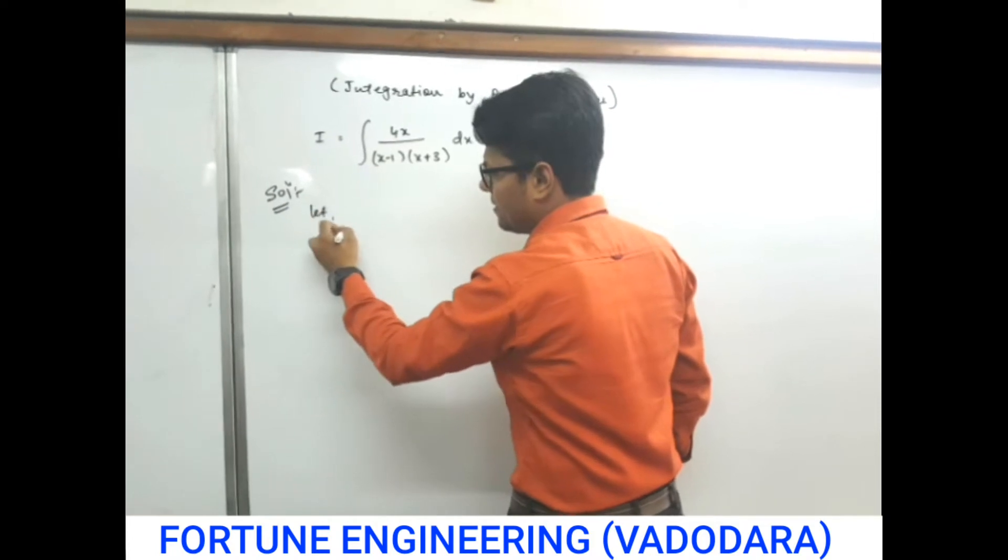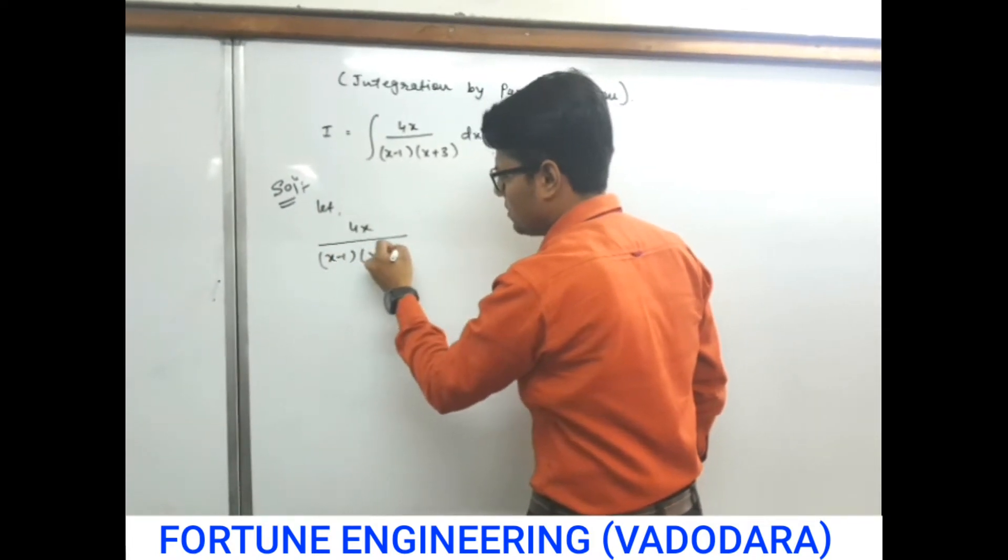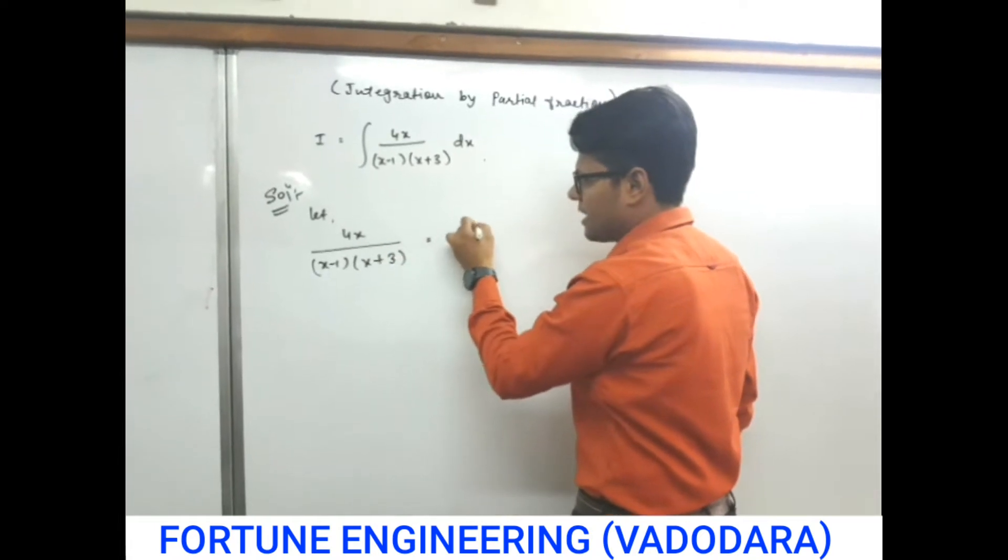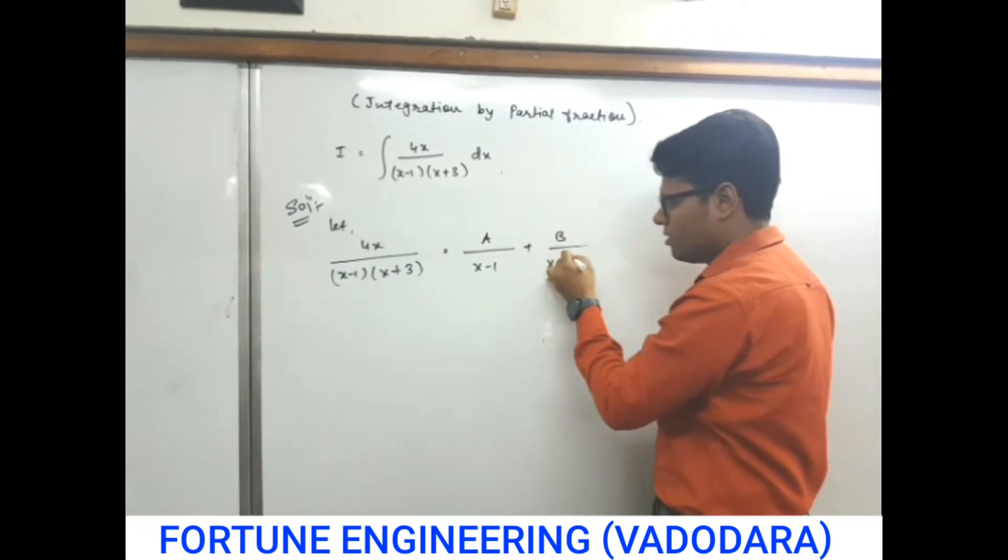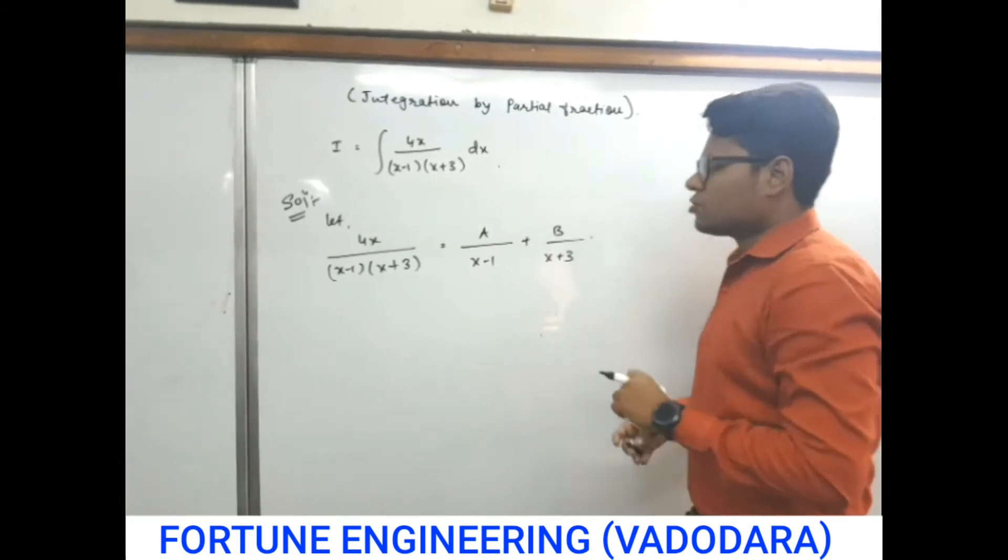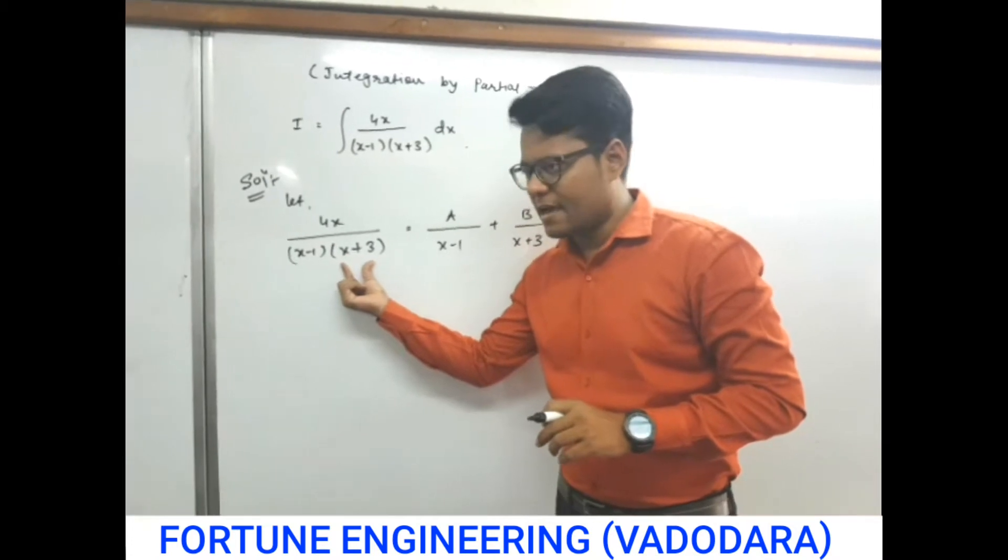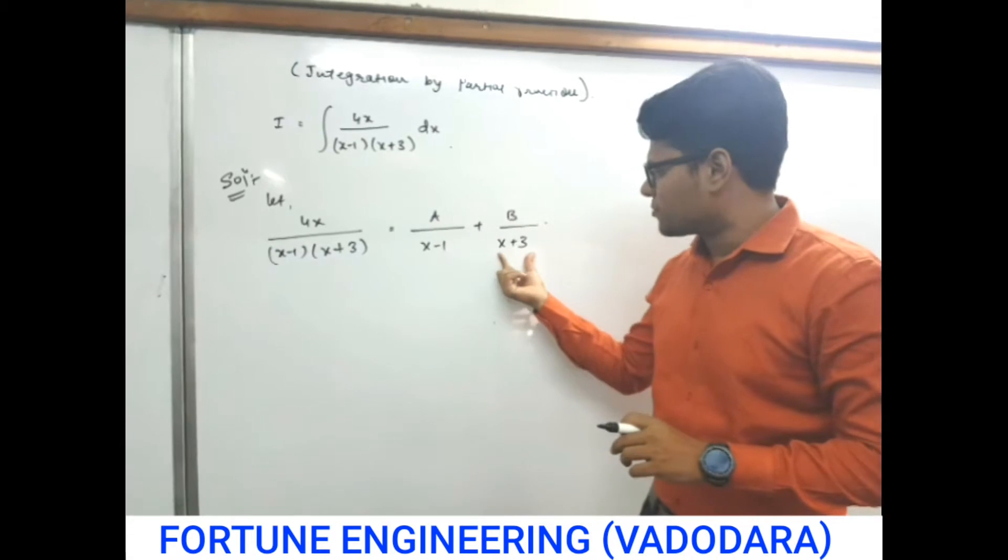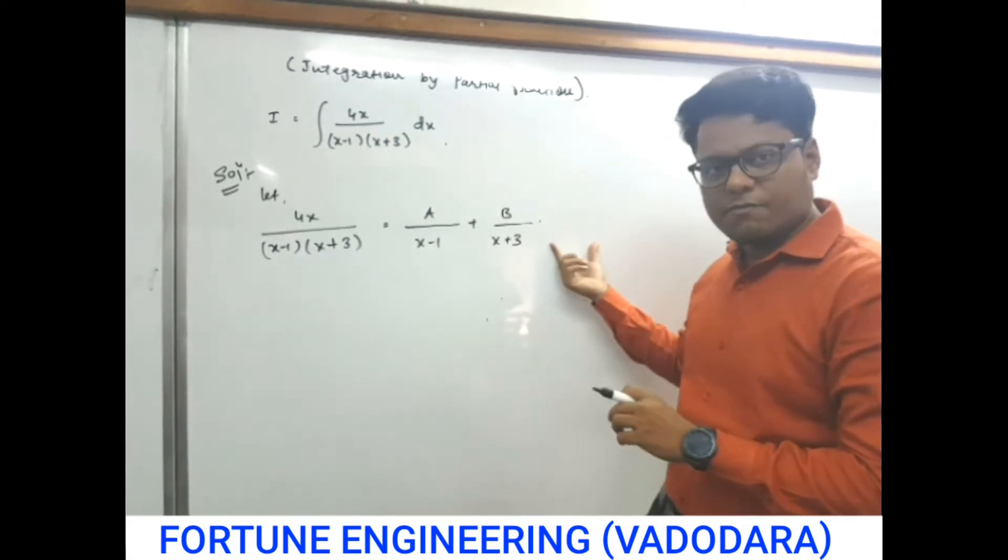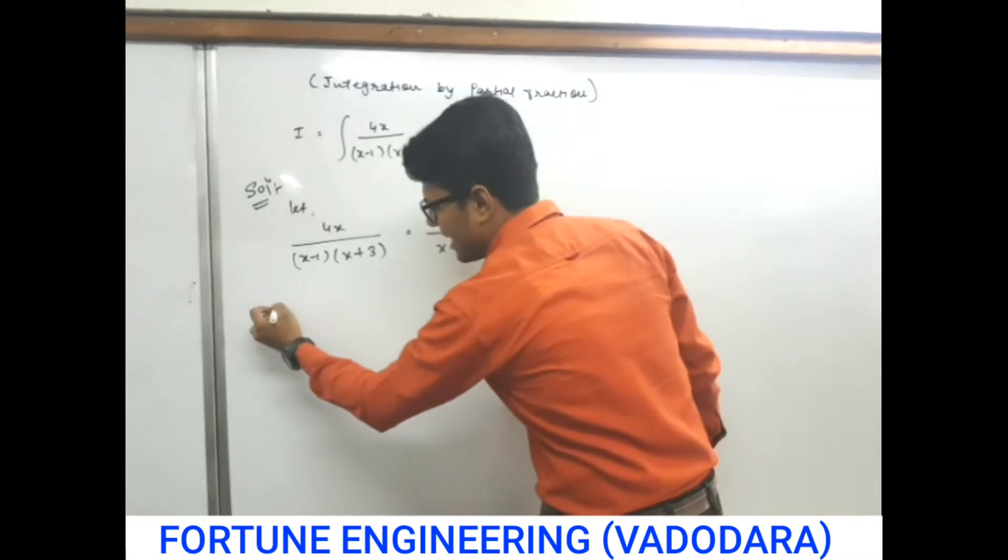Let this 4x upon x minus 1 and x plus 3 as a upon x minus 1, b upon x plus 3. How many means whatever is the factors are there, then give particular x minus 1 as a upon x plus 3 as a upon x minus 1. If third factor is there, then we will produce c. Now, take the LCM.